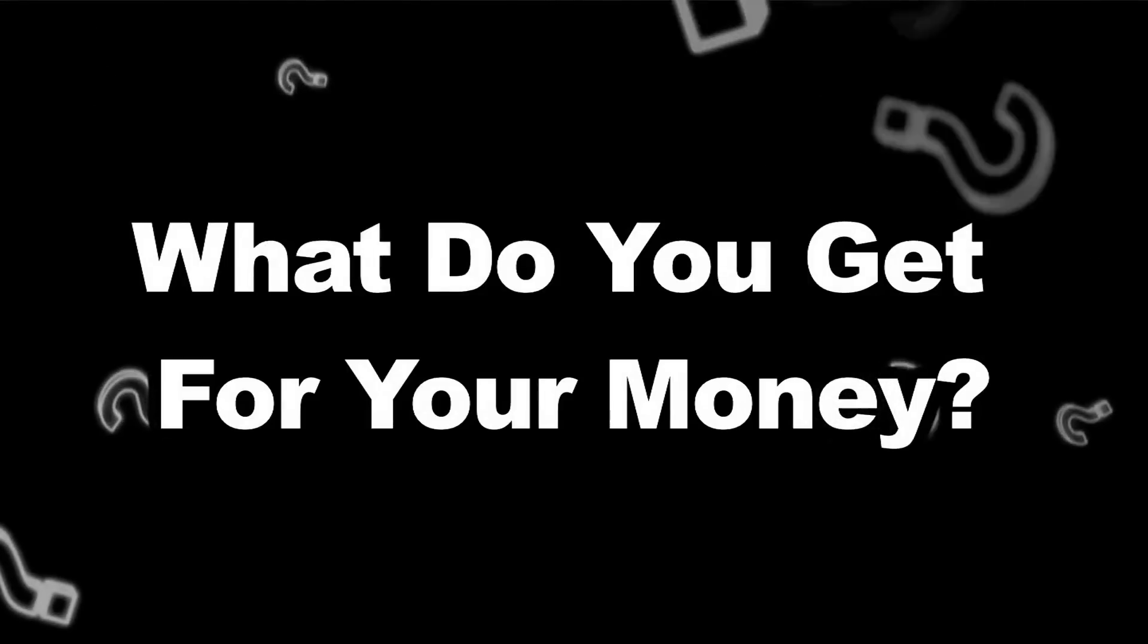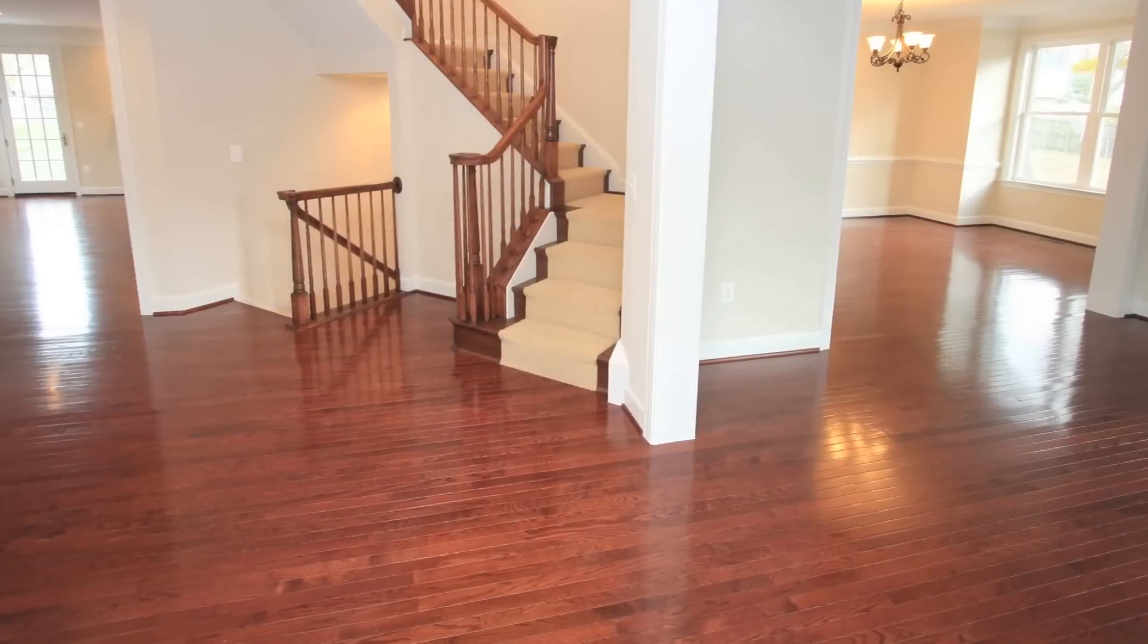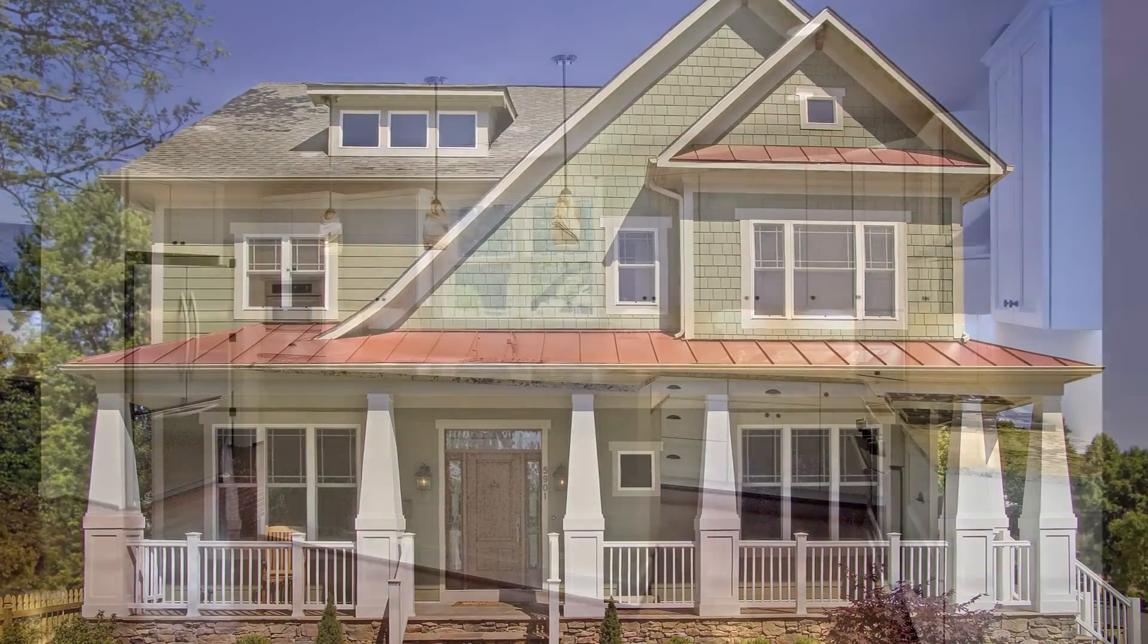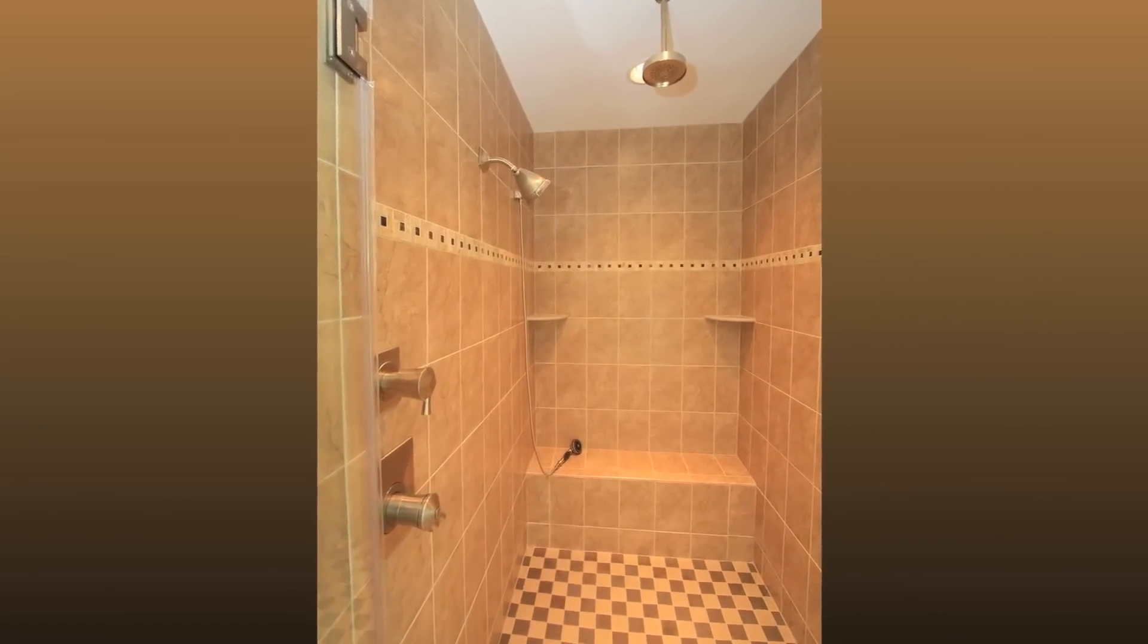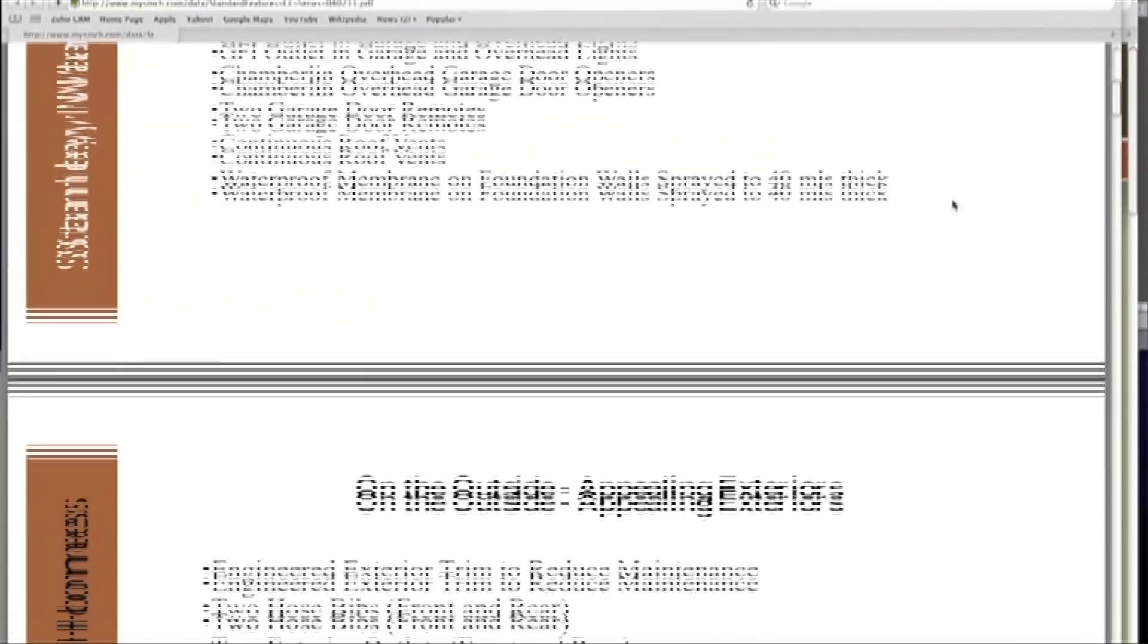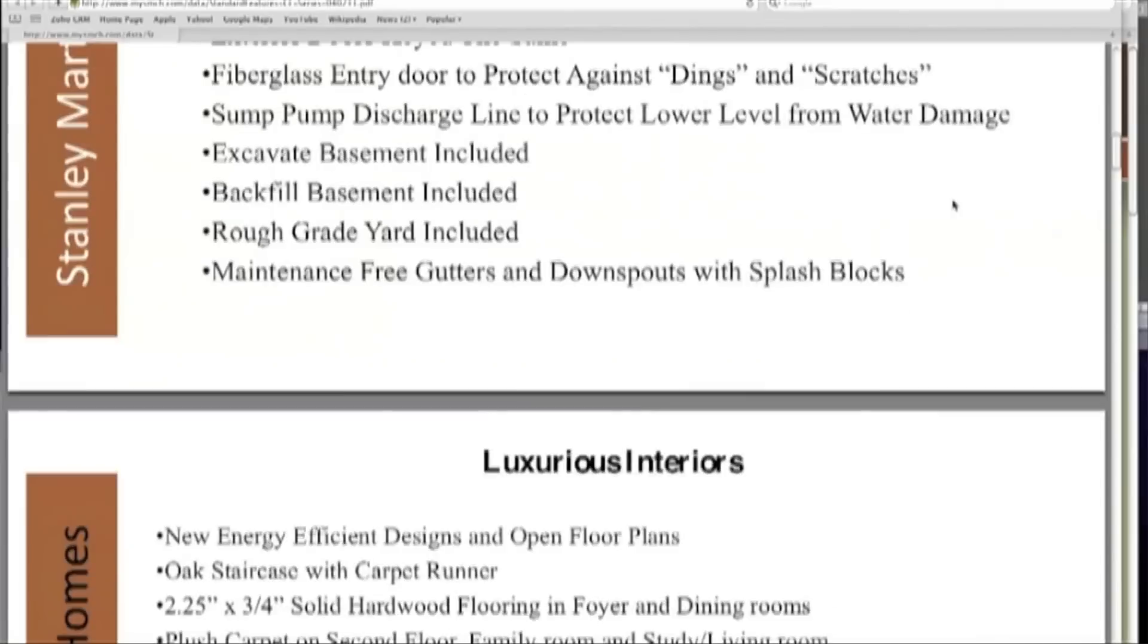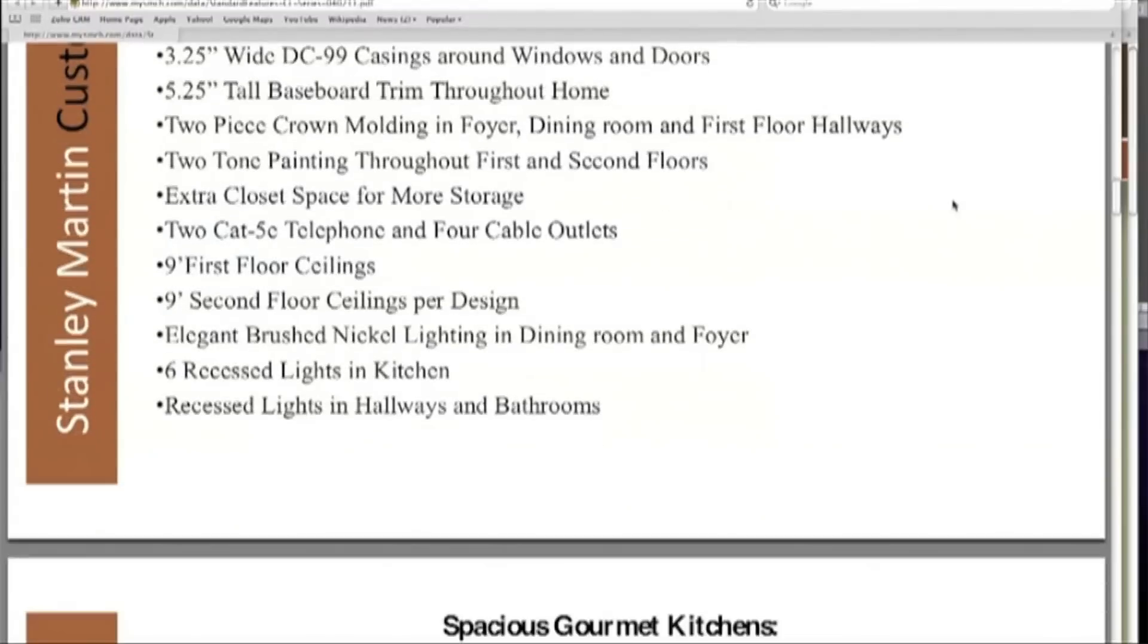So the next question is what do you get for your money? The cost per square foot is also based on the features that are in the home. What kind of flooring, what kind of siding, what kind of windows, what kind of roofing, what's the appliance package, do you have ceramic tile in the bathrooms, etc. So to do an actual comparison from one home to another home on a cost per square foot basis, you need to first understand what the square footage is of the home on the two levels above grade, and then you need to understand what features are included in that price.